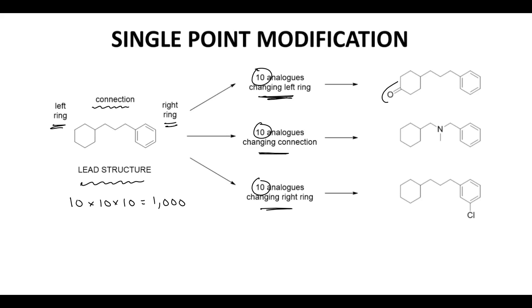We found a ketone on the left ring was the best, putting this amino methyl group in on the connection was the best, and a chloro in this position was the best. So now we've made 30 molecules.